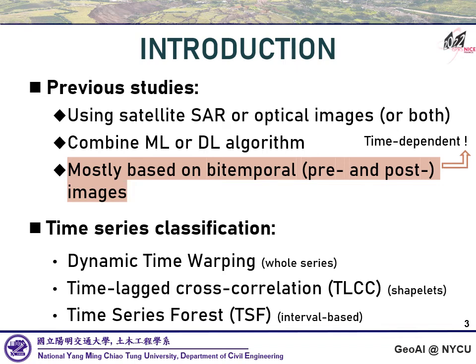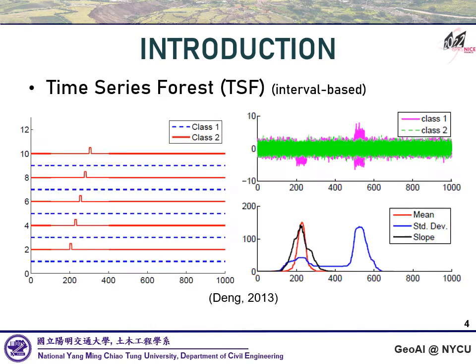There are many ways to classify the time series. For example, dynamic time warping, which uses the entire time series, or TLCC — time lag cross-correlation — which uses extrapolated recognizable subsequences. Another way based on a machine learning approach is called time series forest. TSF is an interval-based tree ensemble classifier, which splits the time series into multiple random intervals. After extracting features like mean and STD in each interval, a decision tree is trained from those features.